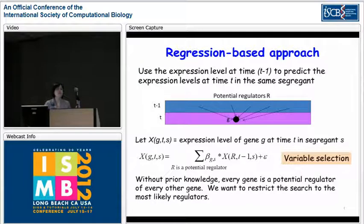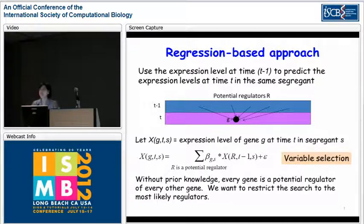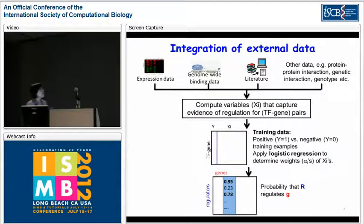Without any prior knowledge, every gene is a potential regulator of every other gene. We want to constrain our search to the most likely regulators. To do that, we integrate additional data sources to guide our search of candidate regulators. We have developed a supervised framework to integrate external data sources, and at the center of it is the training step in the supervised approach.